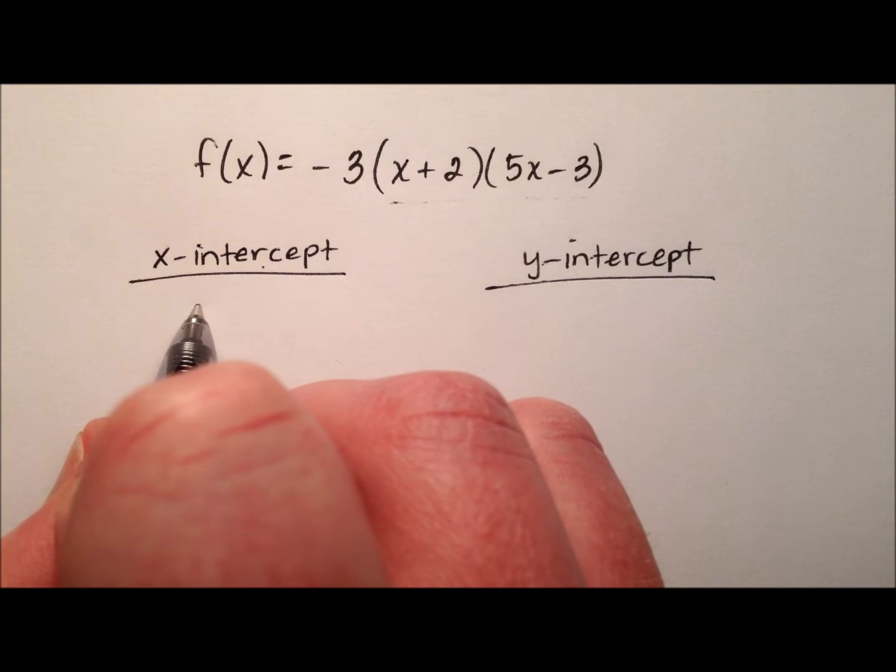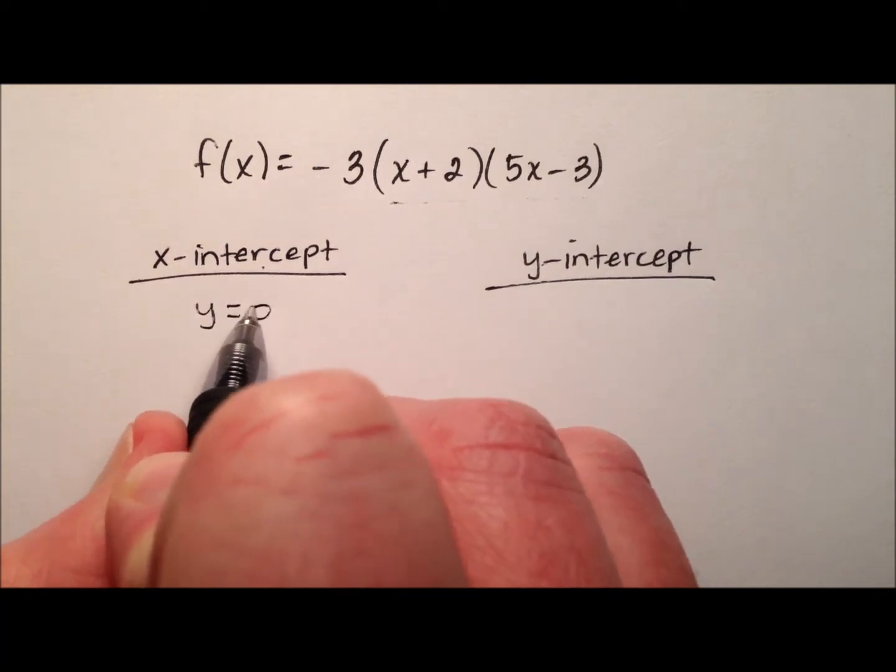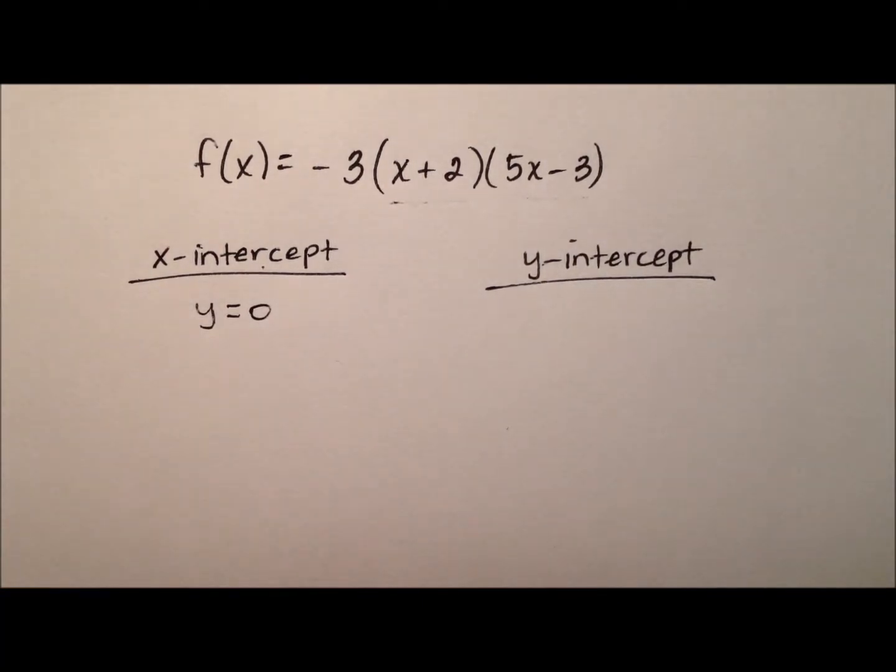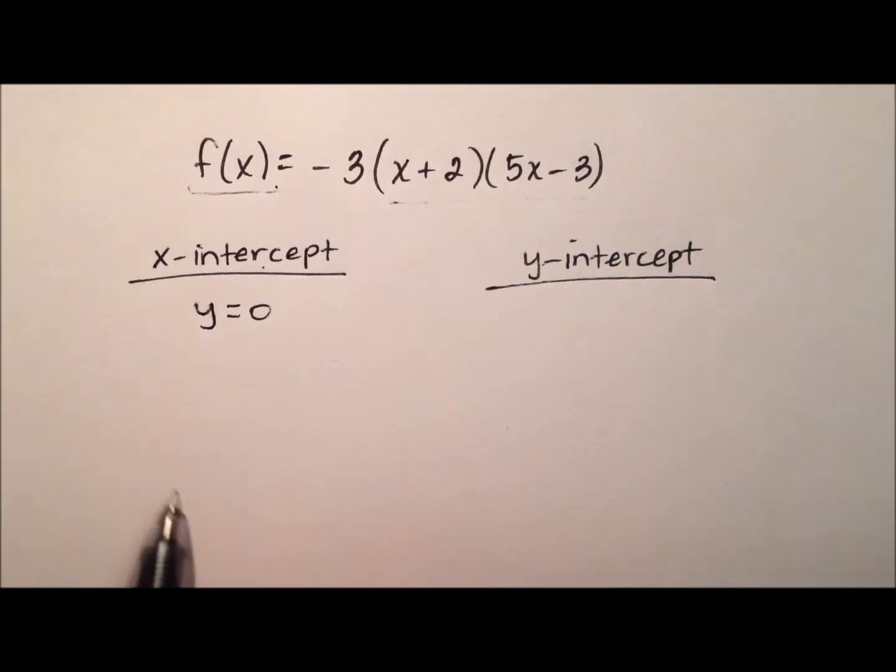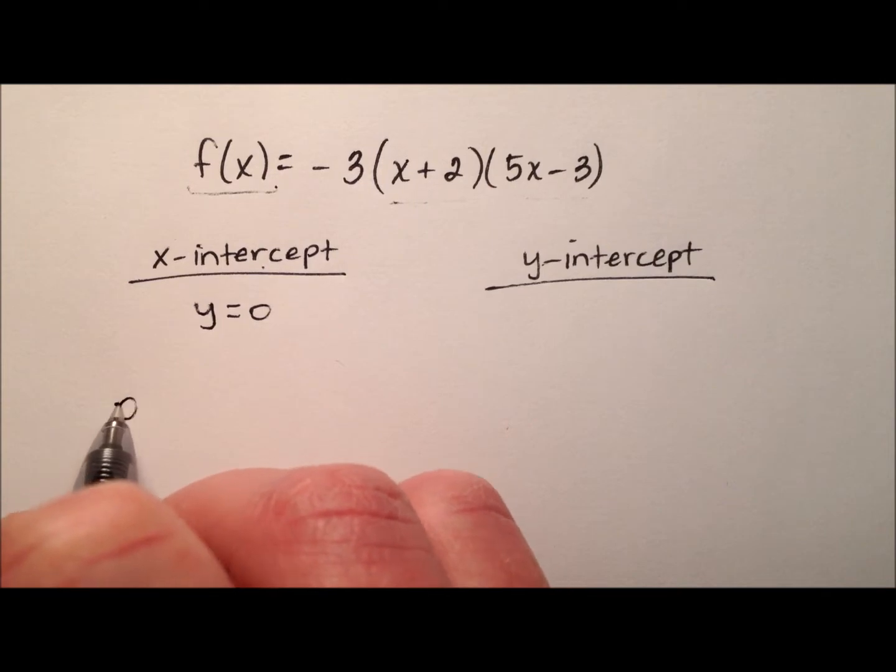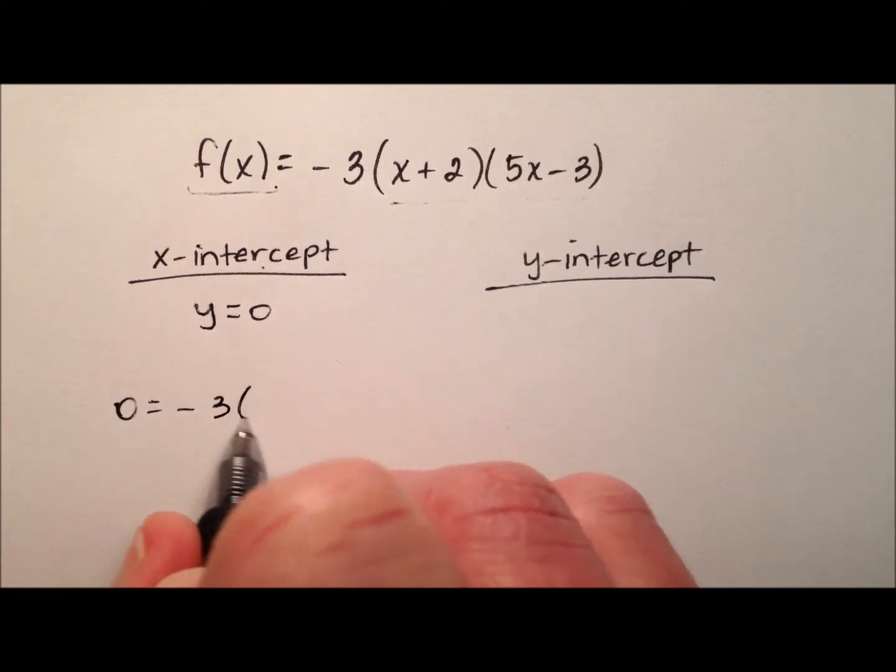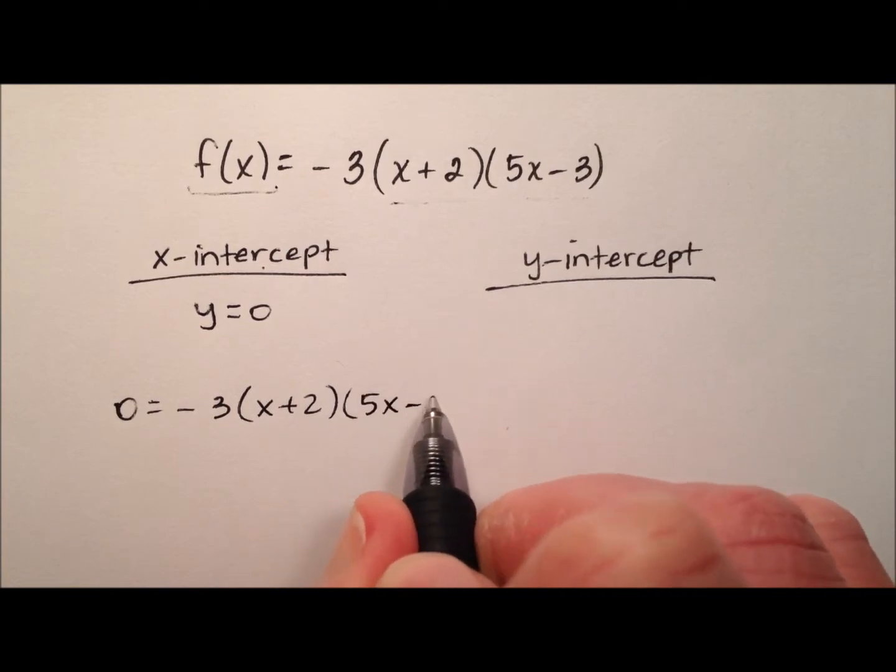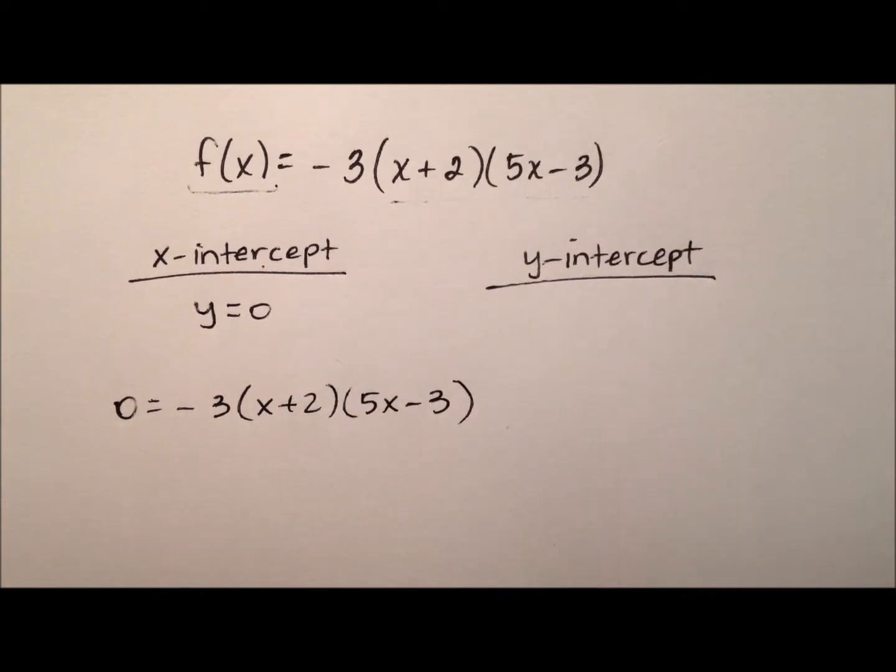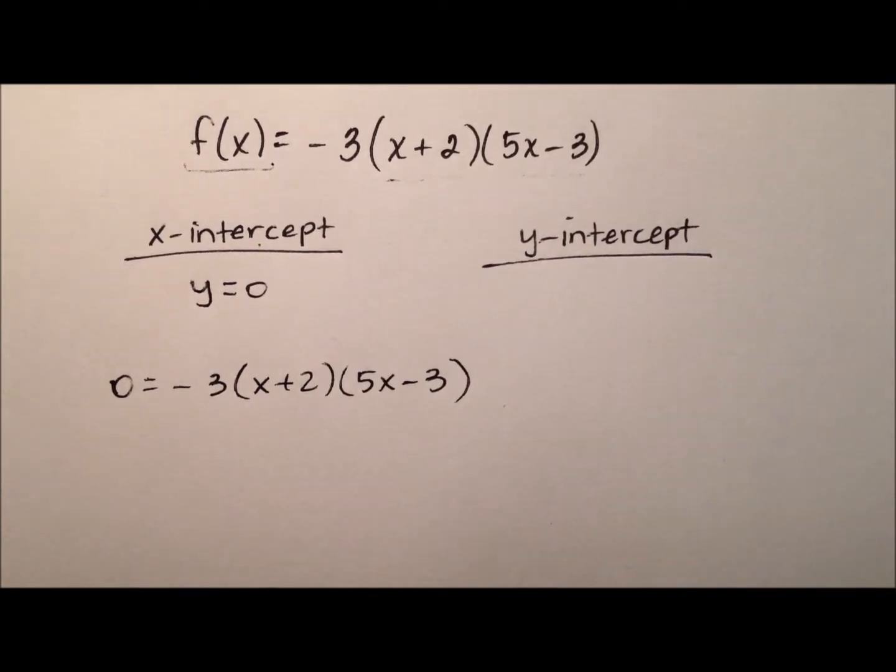So we find these x-intercepts by plugging in 0 for y and then solving. So remember that your f here serves as your y, so I just need to say 0 equals negative 3 times (x plus 2) times (5x minus 3). And so now it's just a matter of solving this equation.